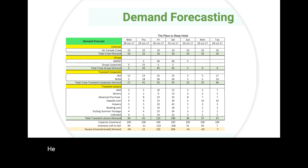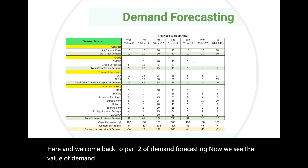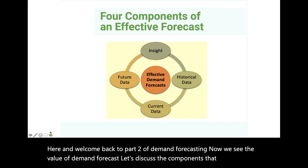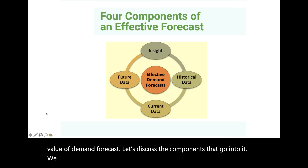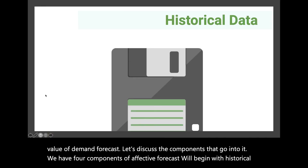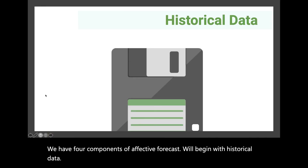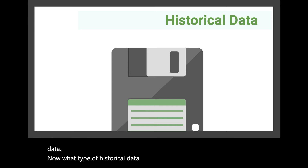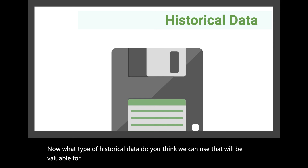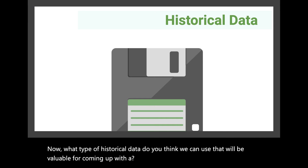Welcome back to Part 2 of demand forecasting. Now that we see the value of demand forecasting, let's discuss the components that go into it. We have four components of effective forecasting. We'll begin with historical data — what type of historical data do you think we can use that will be valuable for coming up with a demand forecast for our hotel?